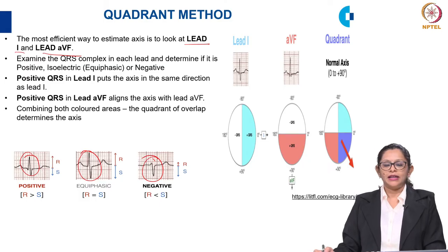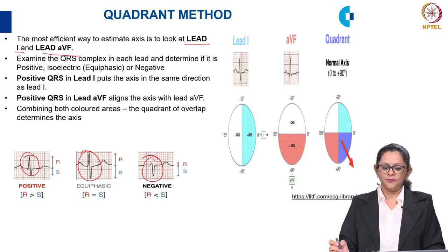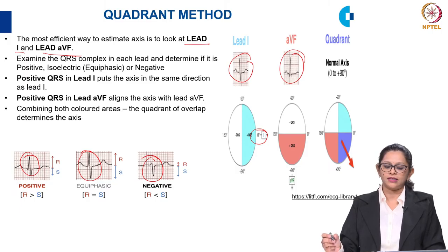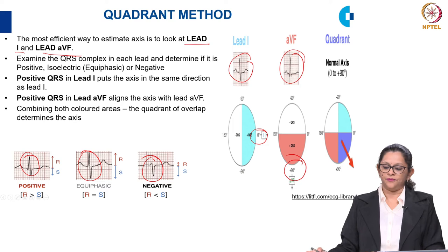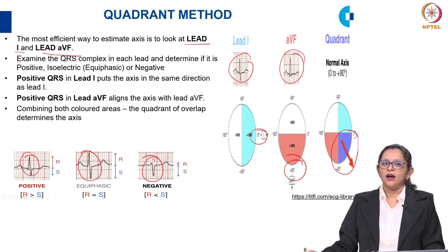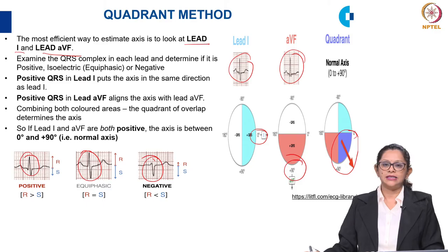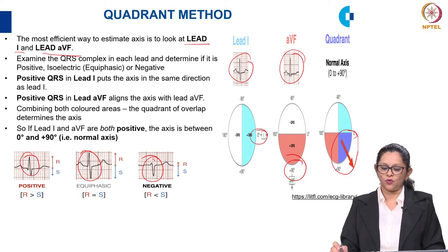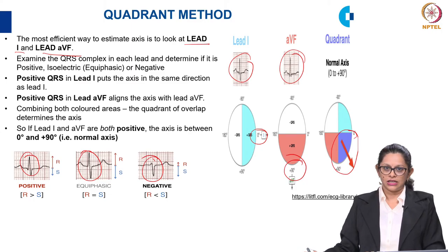If there is a positive QRS complex in Lead I, it puts the axis in the same direction as Lead I, at 0 degrees. A positive QRS complex in lead AVF aligns the axis with AVF at plus 90 degrees. Combining both these colored areas — the quadrant of overlap — determines the axis of the ECG, which is normally between 0 and plus 90 degrees. If Lead I and Lead AVF both have positive QRS complexes, the axis lies between 0 and plus 90 degrees and is considered a normal axis.